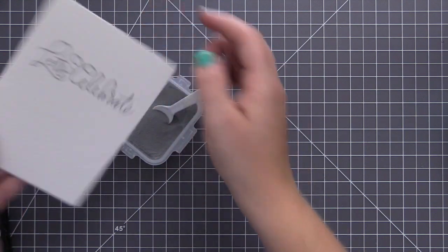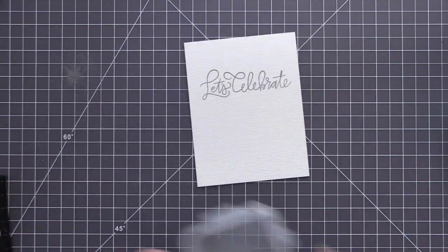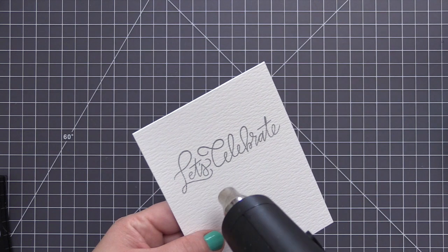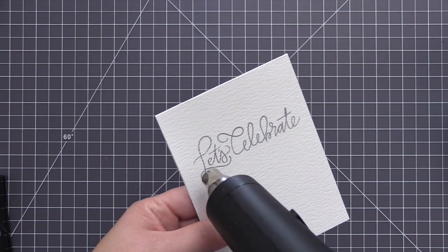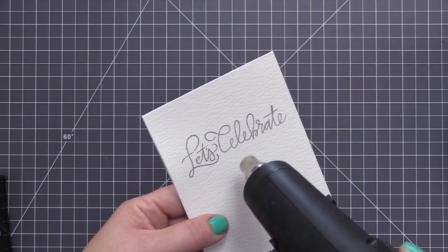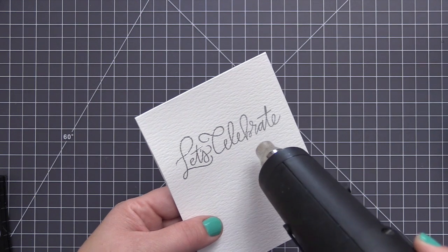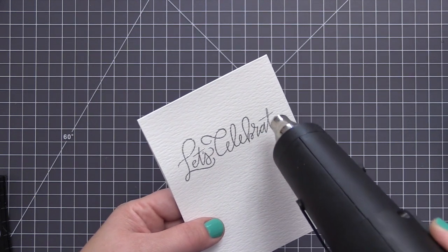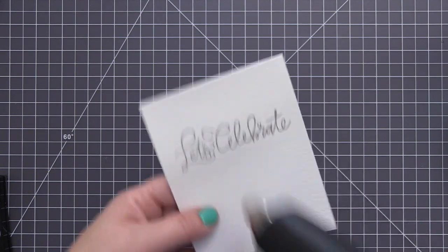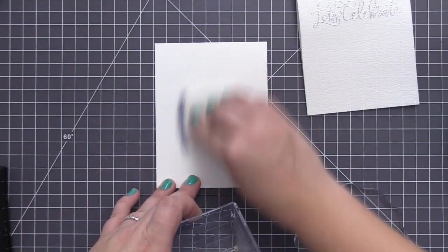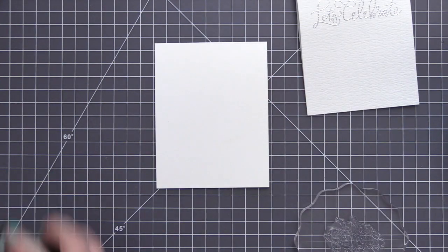So for this card here, the whole card base is made out of watercolor paper and I'm doing some embossing with silver embossing powder. I added the ink first, I stamped the sentiment and then I covered it completely with the embossing powder. And now I'm just taking my heat tool and heating that up. I did keep my stamping on the textured side of the watercolor paper.